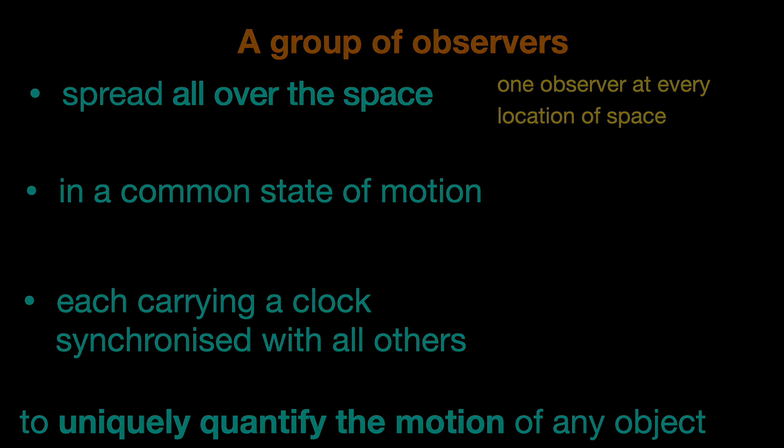Distributed all over the space means there is one observer at every location of space at any given instant. These locations combined give us the space axis. Actually it is all space, but since we are showing only one dimension it boils down to just the space axis.